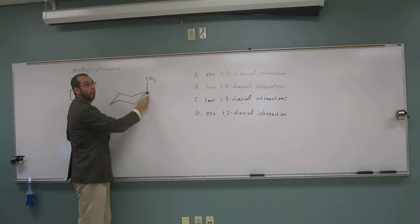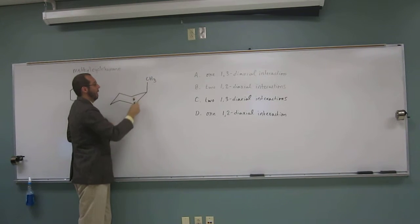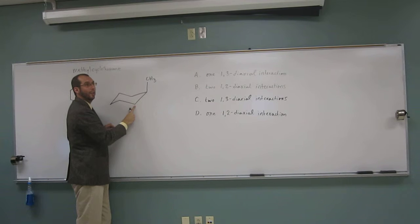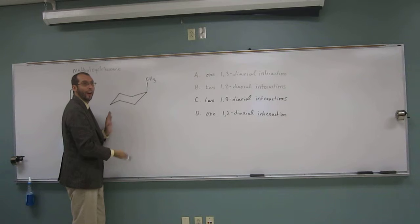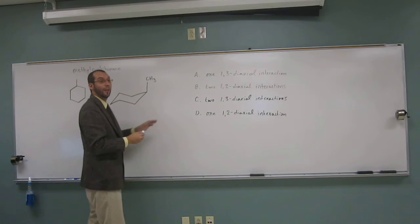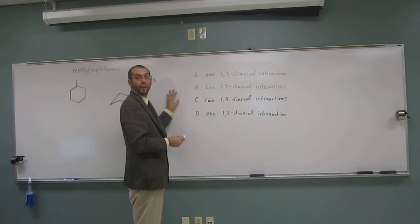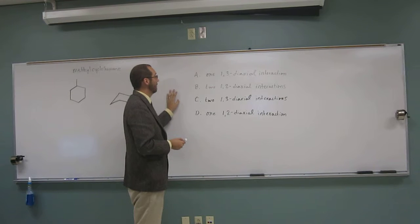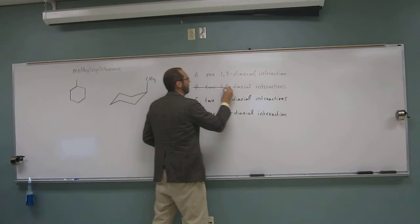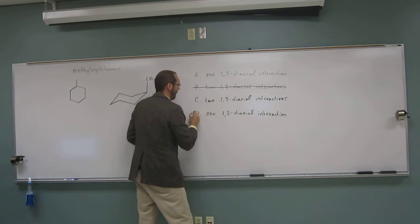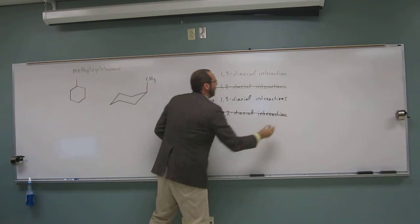We're looking at carbon 1, and that axial is up. Is carbon 2 axial up? No. So are we going to have any 1,2-diaxial interactions? No, because this axial is down here, they're not going to interact. So we can already cross out a couple of the answers. Which ones? B and D, because there's no such thing as a 1,2-diaxial interaction.